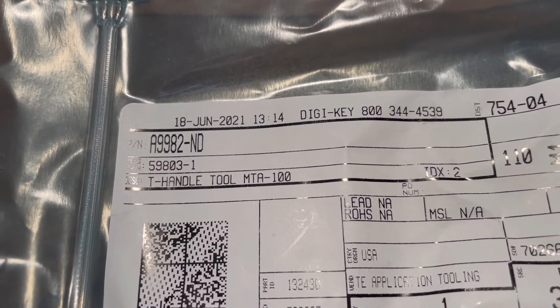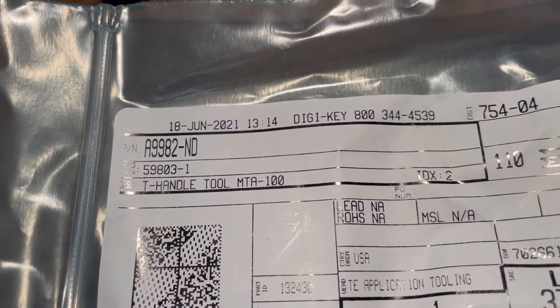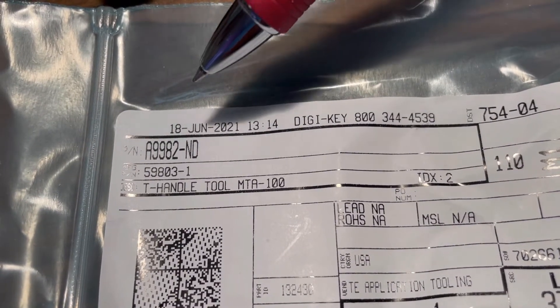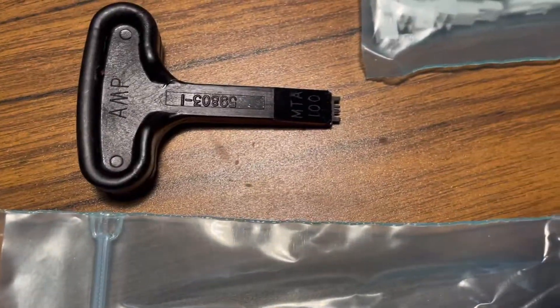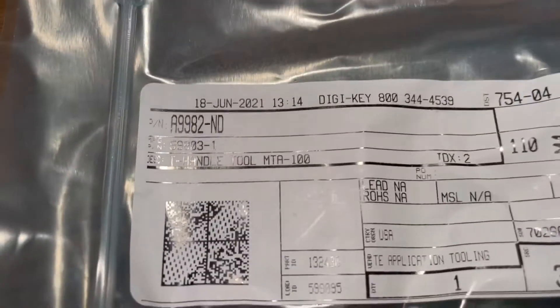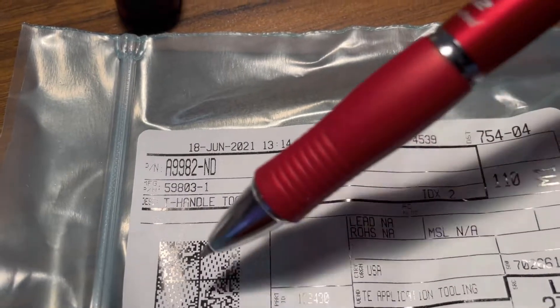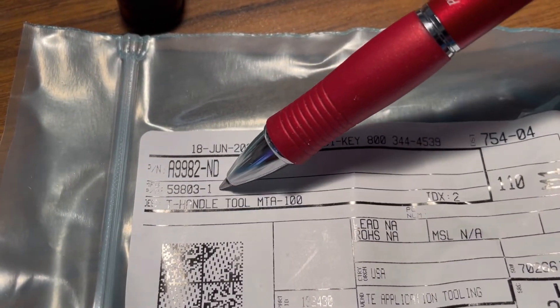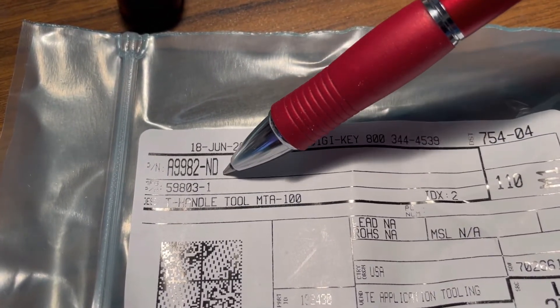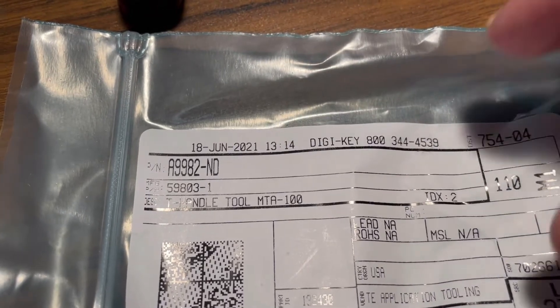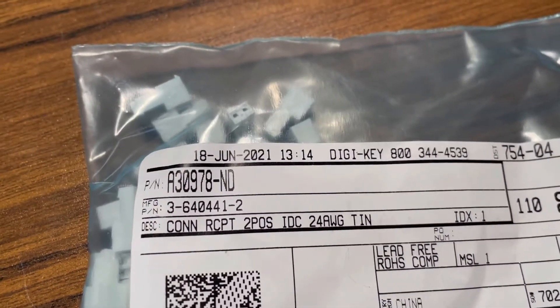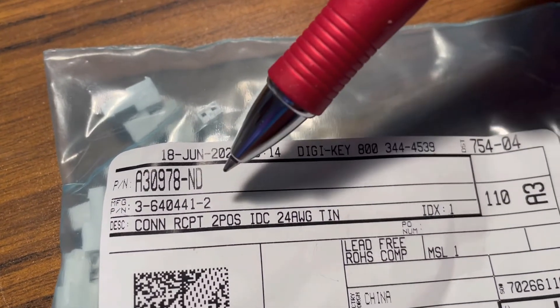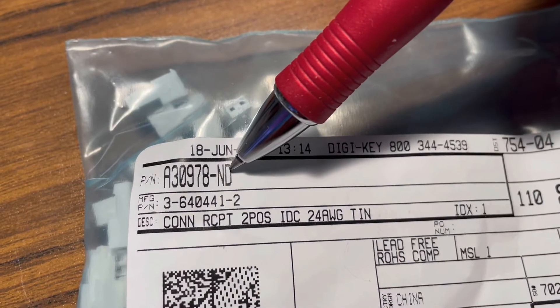Okay, here's the part number for the tool. If you search on DigiKey, you want to use that part number or this tool. Don't look it up by that part number. You won't find it. Use that part number. Now for the connectors, if you're on DigiKey's website, that's the part number you want right there.